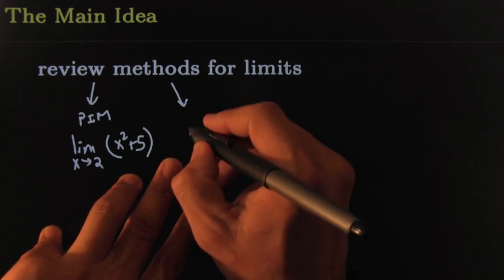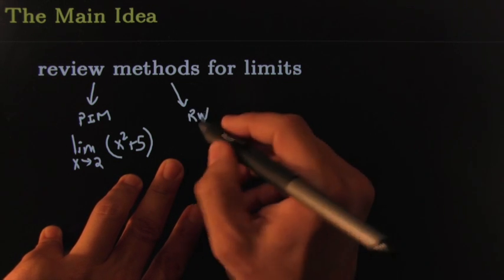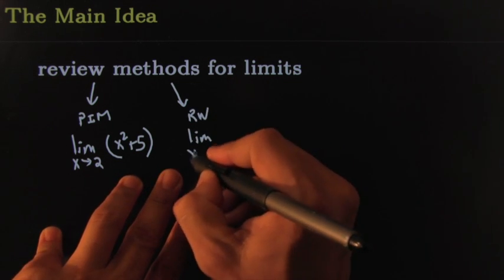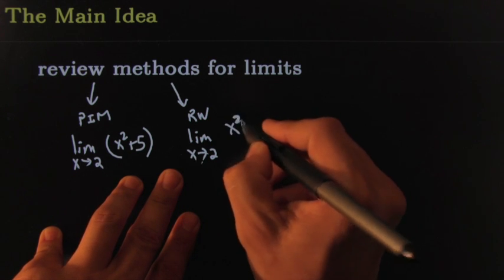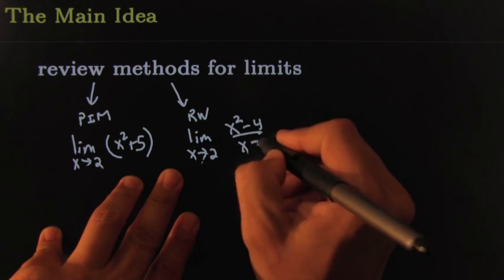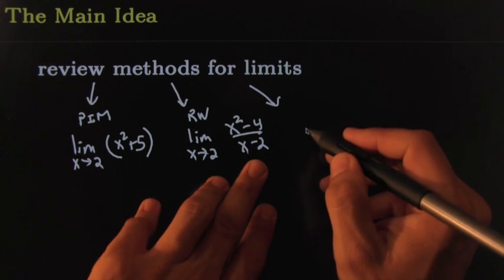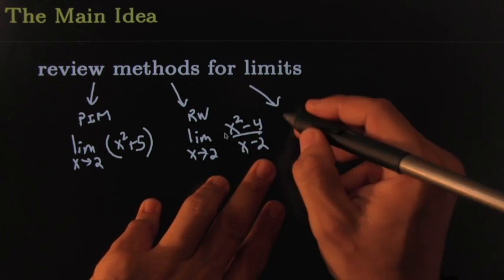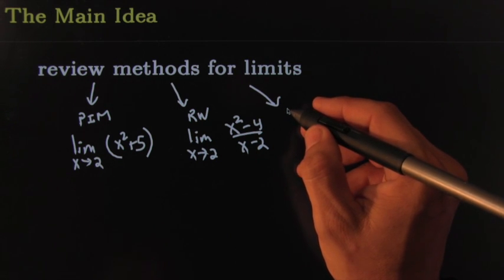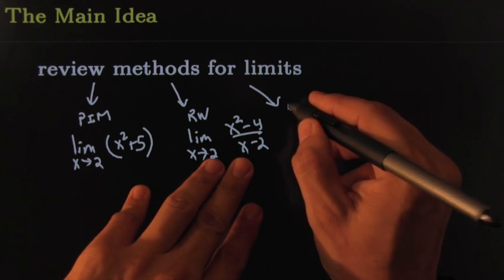If you get one of the indeterminate forms, you may try, for example, the rewrite method, which as a classic example would go something like this: x squared minus 4 over x minus 2. Clearly that can be reduced and rewritten, and you're done.